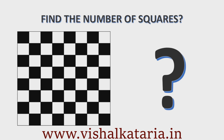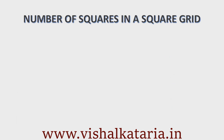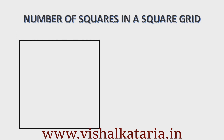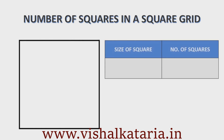Now let us start with a very simple one. Look at this square — this is a 1 by 1 square. If we try to find the number of squares in this, there is only one square, and the dimension of that square is 1 by 1.